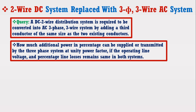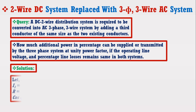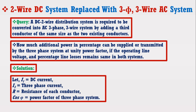To find its solution, let's assume that I1 is equal to DC current, I3 is equal to 3-phase current, R is the resistance of each conductor, and cosine of phi is the power factor of the 3-phase system.